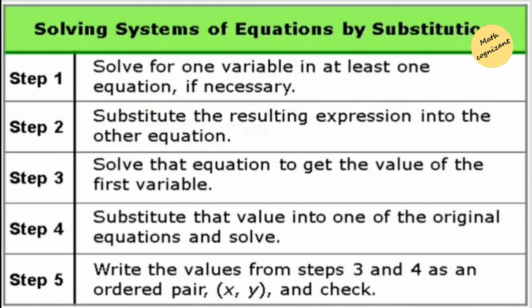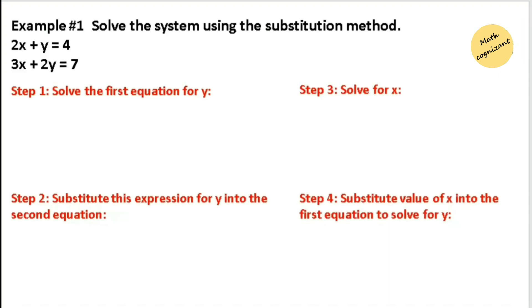Here are the steps we need to follow when solving using the substitution method. The first step is to solve an equation for one variable — you need to pick a partial solution for x, y, or whichever variable is given. Then substitute the partial value of that variable into the other equation to find both solutions. You will understand it much better when you solve the questions.